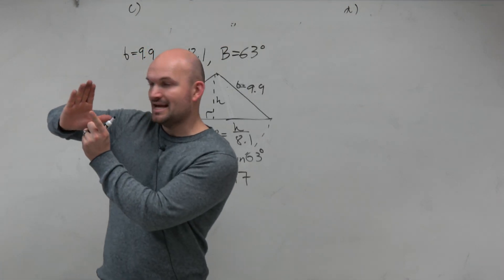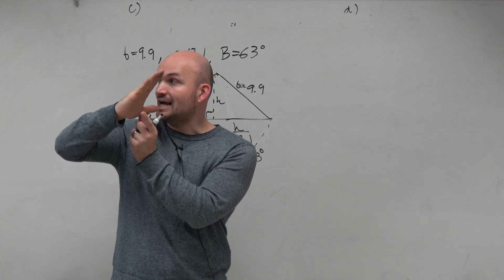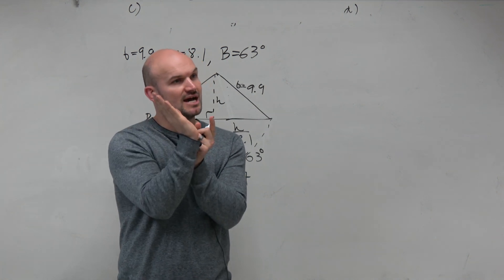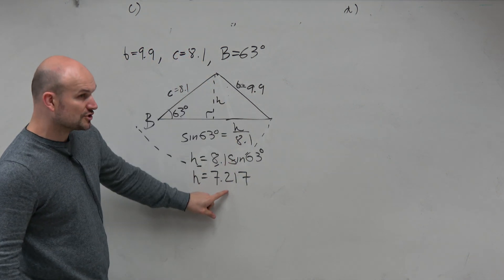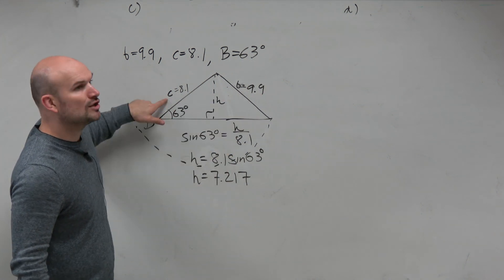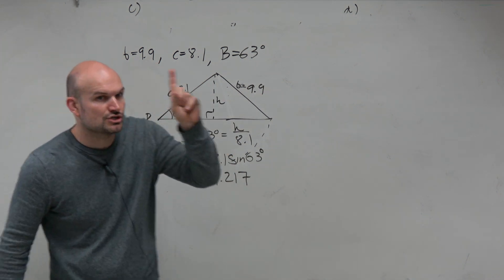Right? A, in that case, is larger than the height, but it's smaller than the other side. In our case, you can see that 9.9 is larger than the height, but it's also larger than this side. That's why only one triangle exists.